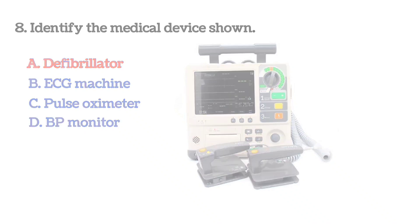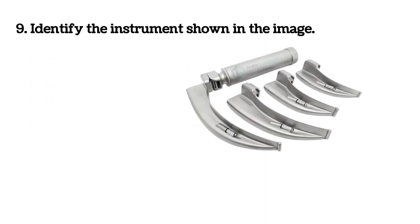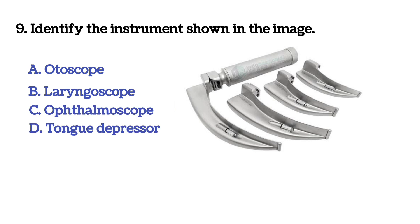Next question: identify the instrument shown in the image. Option A: otoscope. Option B: laryngoscope. Option C: ophthalmoscope. Option D: tongue depressor. The answer is B, laryngoscope.